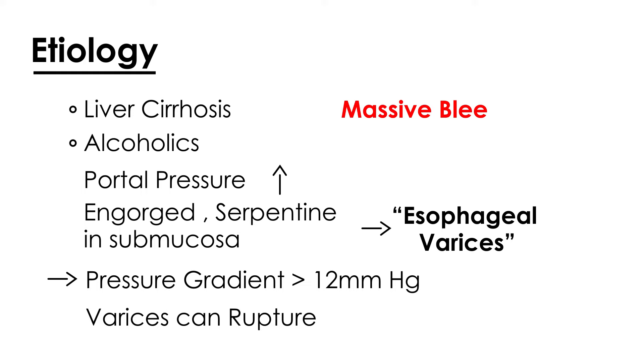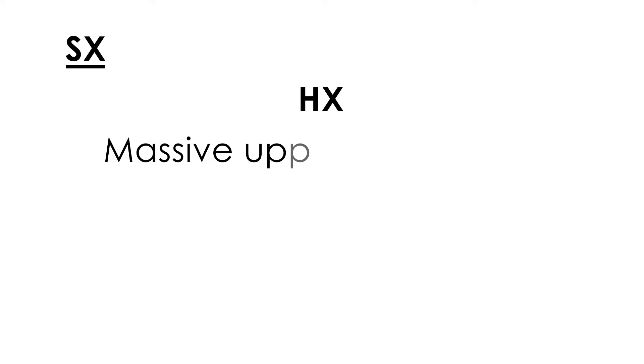When that happens, you have essentially caused massive bleeding, and it's actually pretty dramatic when a patient presents to an emergency room. Apart from the history of a person who is an alcoholic with known liver cirrhosis, you basically have an episode of massive upper GI bleeding.